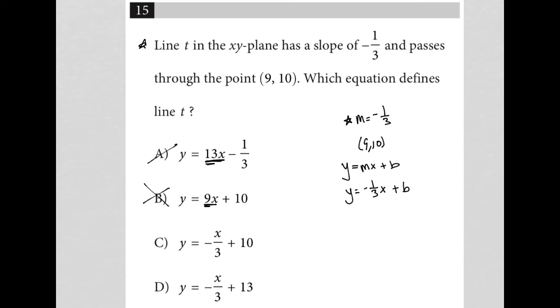Choices C and D both represent a negative one-third slope. So now what's left is to figure out, is our y-intercept equal to 10, or is it equal to 13? The best way to do that is to take these values from the ordered pair that was provided, the point that was provided, and plug them into our equation to solve for b.